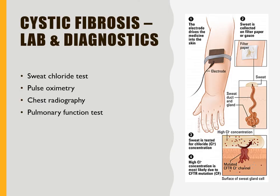The main diagnostic test for cystic fibrosis is the sweat chloride test. CF patients have excessive chloride, giving their skin a salty taste. A sweat chloride level above 50 is considered suspicious and above 60 is diagnostic. Pulse oximetry may show decreased oxygen saturation, particularly during pulmonary exacerbations. Chest radiography may show hyperinflation, bronchial wall thickening, atelectasis, or infiltrations. Pulmonary function tests may reveal decreased forced vital capacity and forced expiratory volume with increased residual volume.